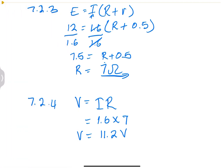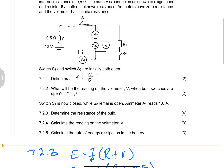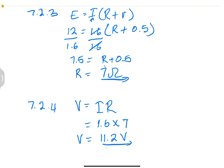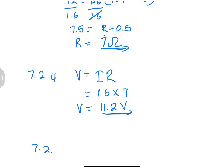Because the bulb is the only one in the external circuit, the external voltage is 11.2 volts. The internal voltage — that is, the voltage across the internal resistor — will be the difference between the EMF and the external voltage. Now let's move on to the next question.